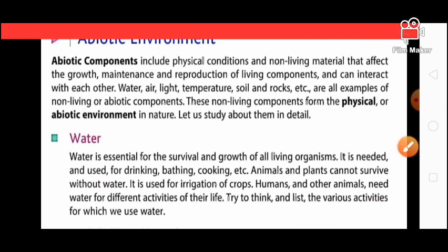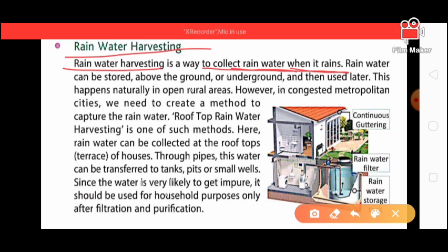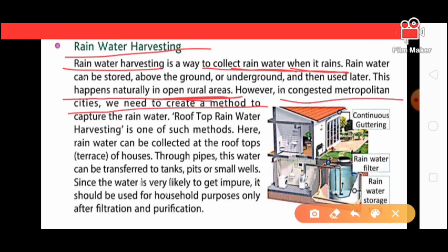Rainwater harvesting is a way to collect rainwater. When it rains, rainwater can be stored above the ground or underground and then used later. This happens naturally in open rural areas. However, in congested metropolitan cities we need to create a method to capture the rainwater.